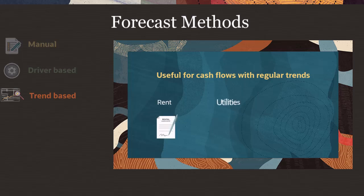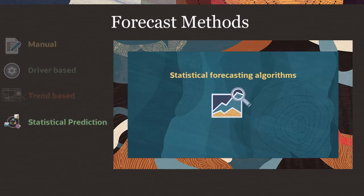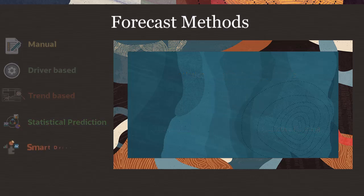Trend-based forecasting works especially well for recurring expenses with consistent patterns. Statistical prediction uses advanced time series algorithms to automatically select the best forecasting method based on your historical data patterns. This method is also referred to as auto predict and predictive planning, and we will have another detailed video dedicated to it.